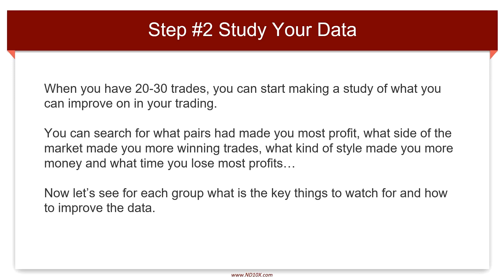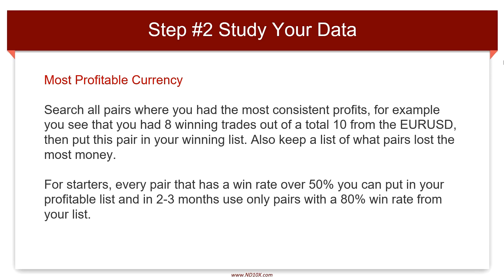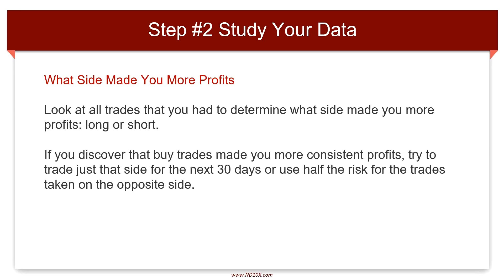Most profitable currency: search all pairs where you had the most consistent profits. For example, if you see that you had 8 winning trades out of a total 10 from the EUR/USD, then put this pair in your winning list. Also keep a list of what pairs lost the most money. Every pair that has a win rate over 50 percent you can put in your profitable list, and in two to three months use only pairs with an 80 percent win rate from your list.